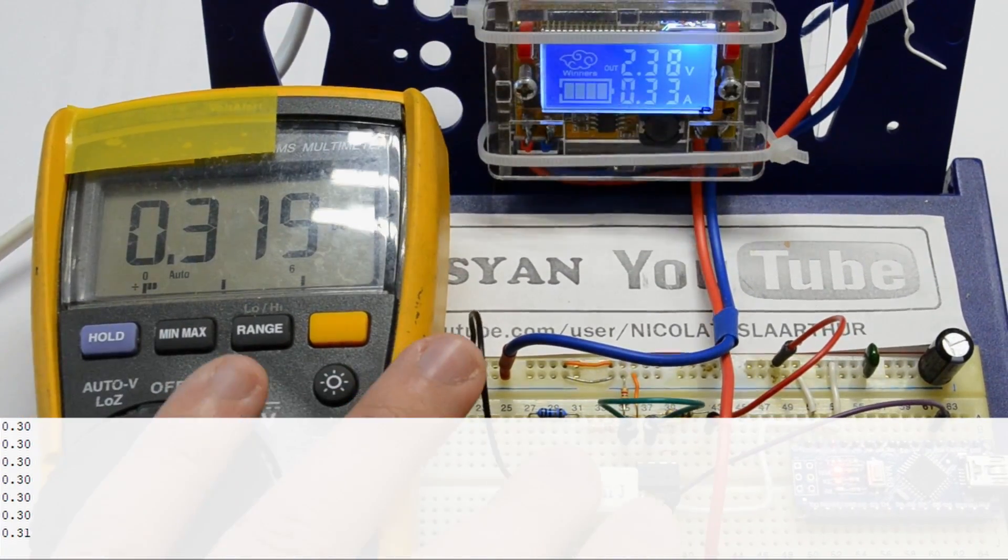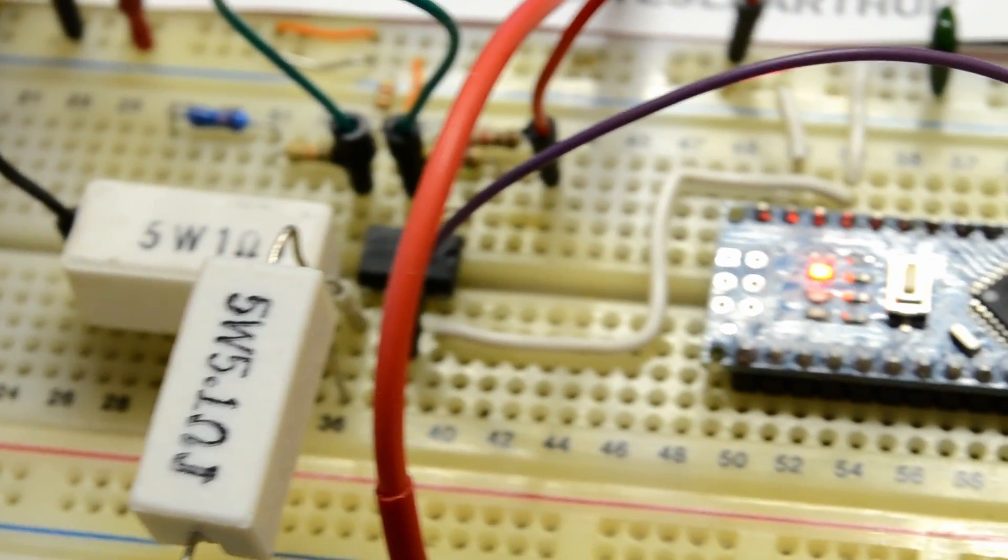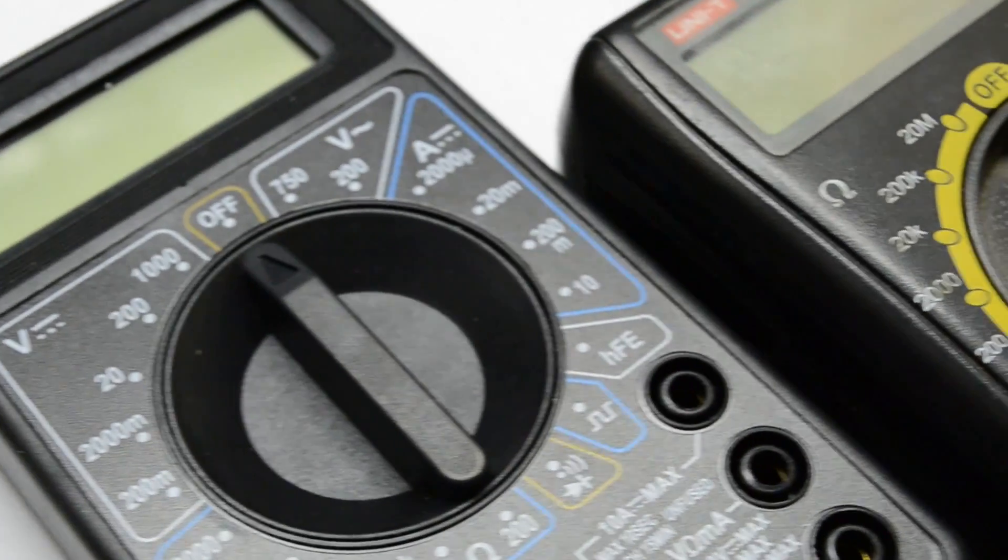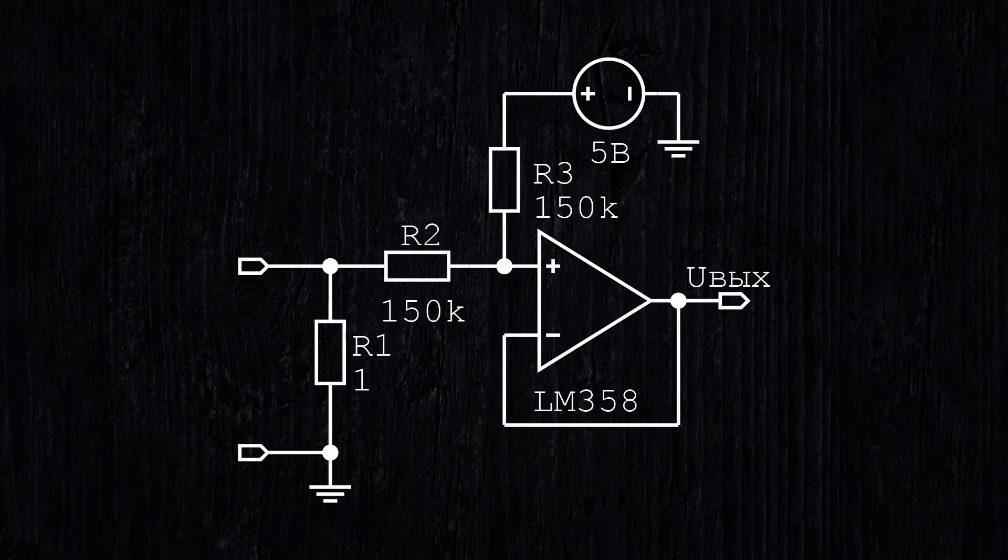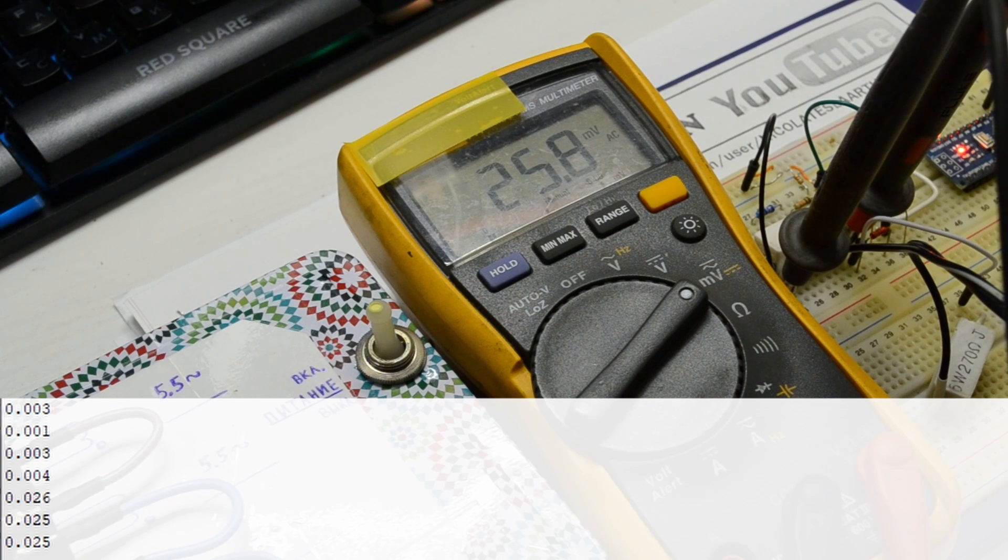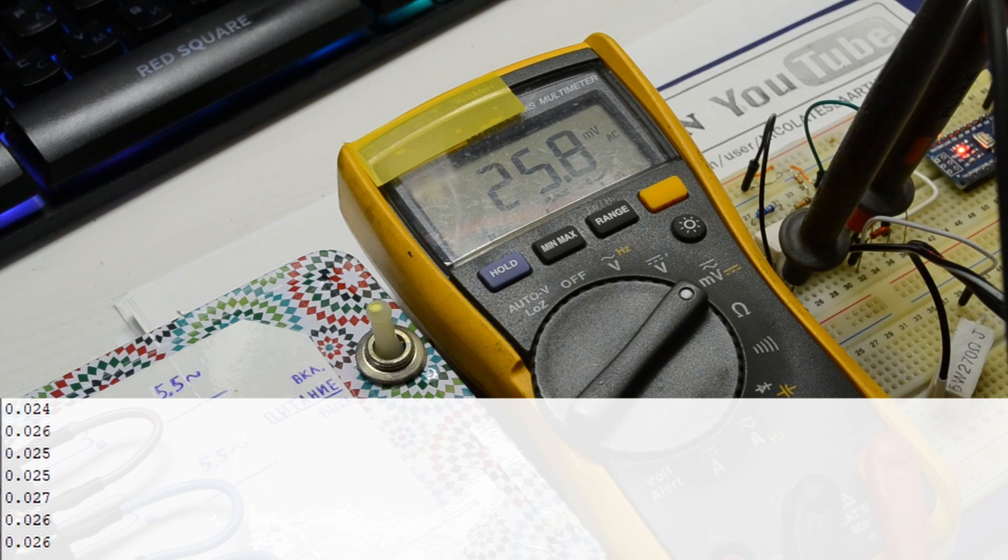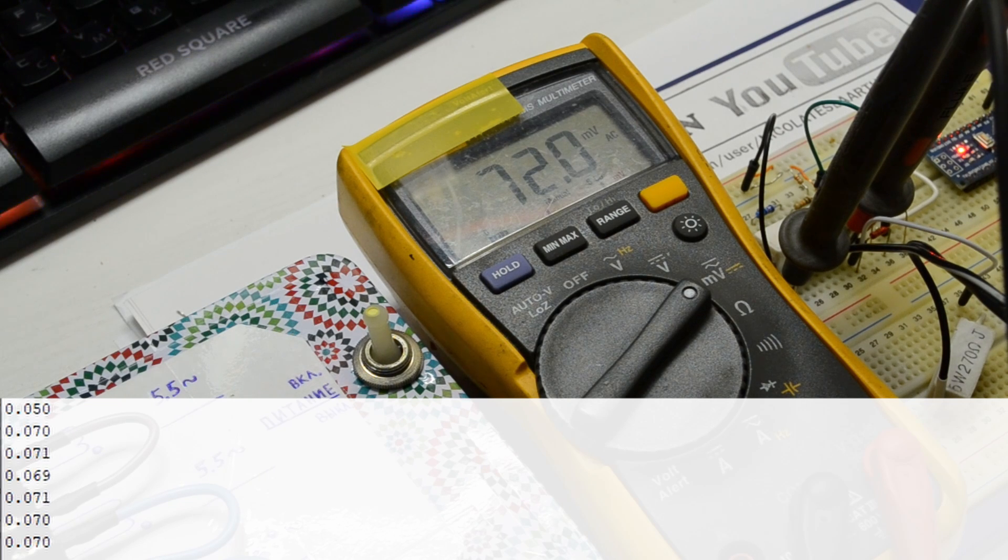By the way, using RMS voltage, you can calculate the alternating current through the load. A lot of cheap multimeters can't measure this. To do this, let's complicate the circuit by adding a constant 2.5V offset, just like we did when measuring voltage. We use two resistors, for example, 150 kOhm each. We measure the voltage, multiply it by 2, since it is obtained from the divider by 2. Then divide this by the resistance value and get the true RMS current through the load.